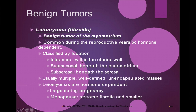Fibroids are classified by location. They could be within the uterine wall (intramural), beneath the endometrium (submucosal), or beneath the serosa (subserosal). The names indicate their location. There are usually multiple fibroids — they are well-defined, unencapsulated masses.